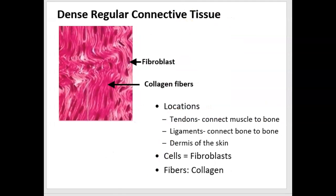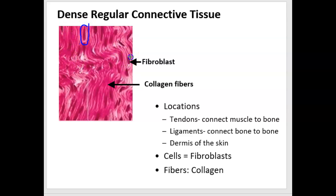Now dense connective tissue, the fibers are very dense, as the name would imply. There's not much space in between the fibers. The fibers are so abundant that there's very little space in between them — they're packed in tight. And they're just collagen fibers, providing strength.